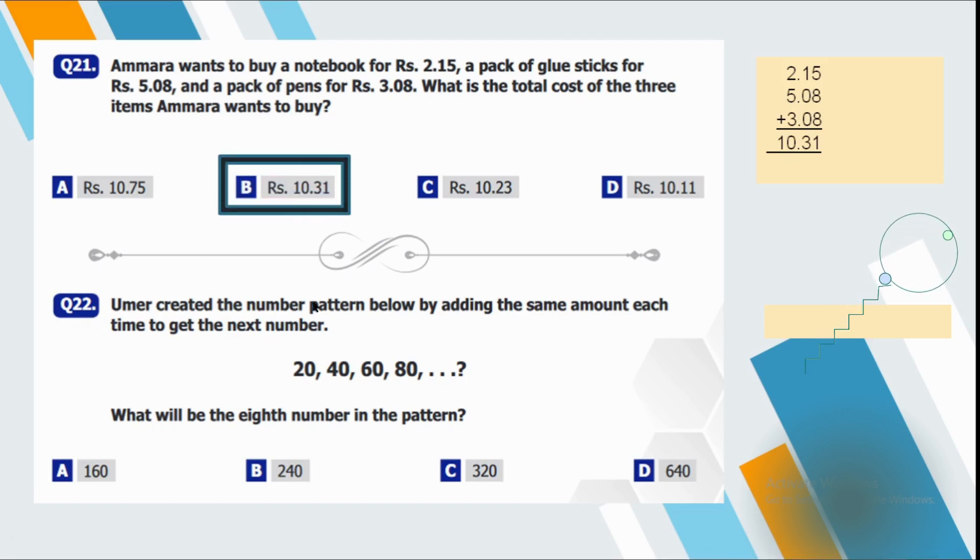Question number 22. Umar created the number pattern below by adding the same amount each time to get the next number. What will be the eighth number in the pattern? We may see that there is a jump of 20. So 28ths are 160. You may directly find it out. Otherwise, you can keep on adding 20 into the last answer. So you will get A.